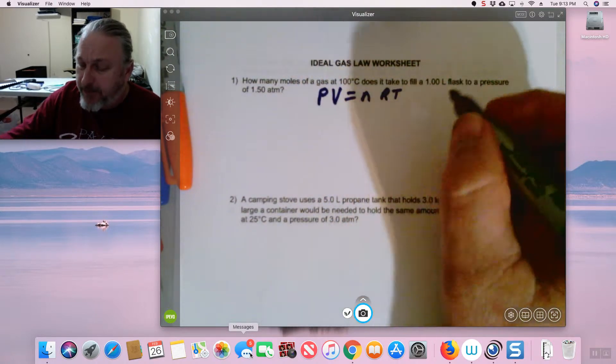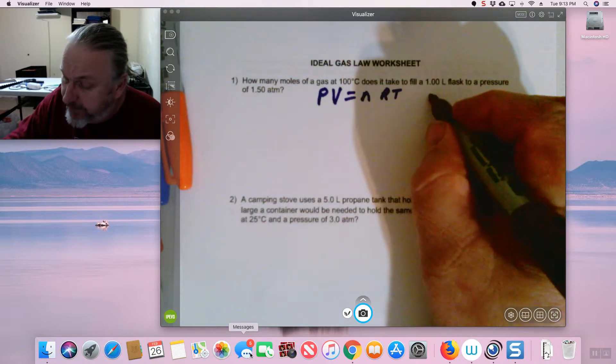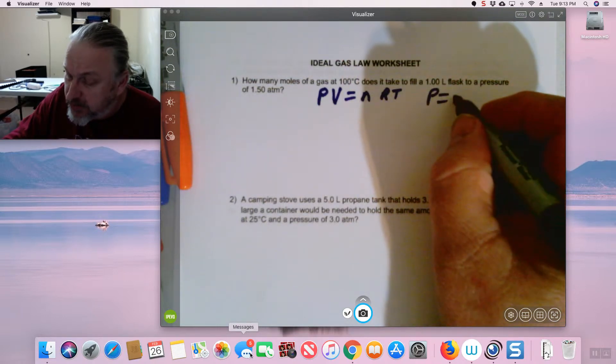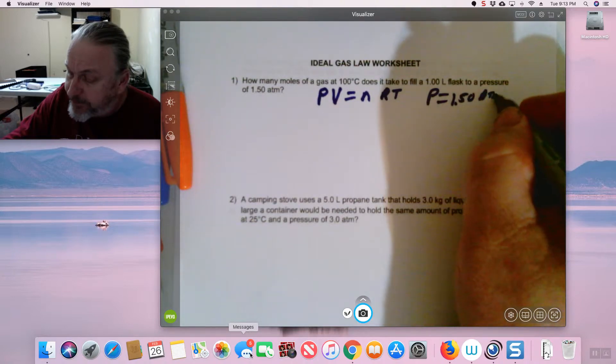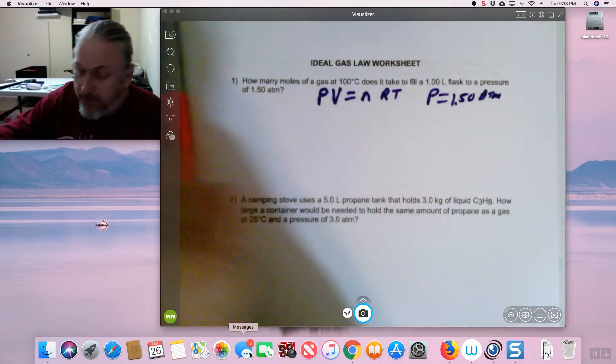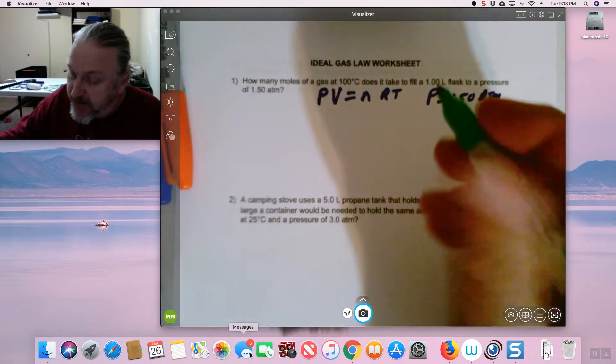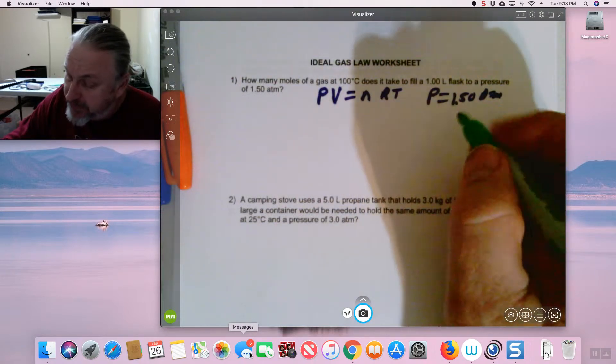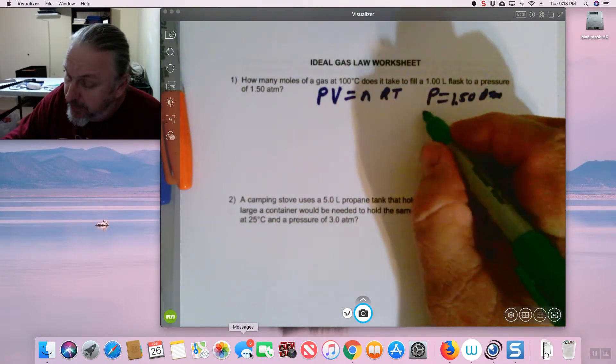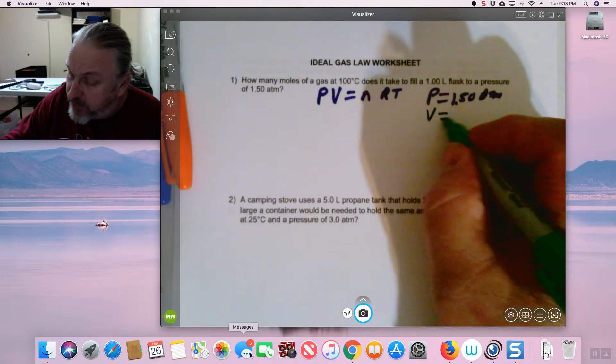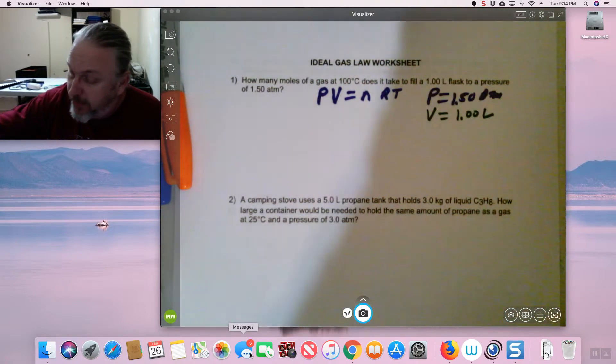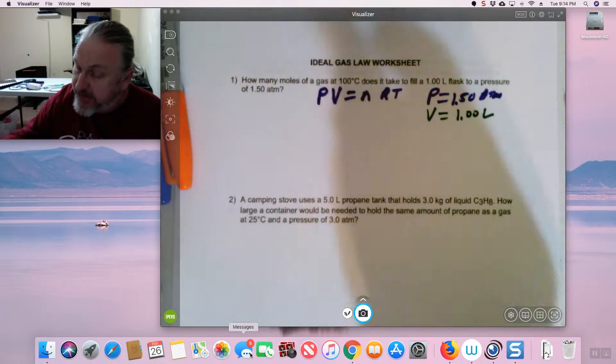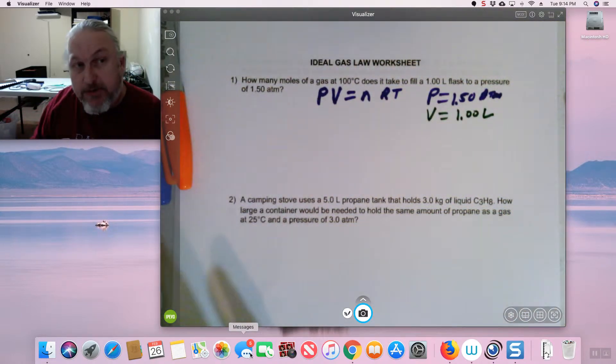And let's identify our variables. It gives us a pressure, P equals 1.5 atmospheres. It also gives us our temperature. Let's do volume first. V equal 1 liter.